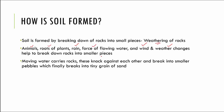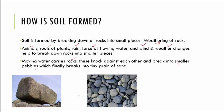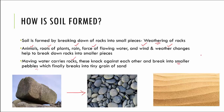Moving water carries rocks, and forceful water can carry anything with it. When it carries these rocks, they knock against each other and break into smaller pebbles. Once they break into smaller pebbles, you finally end up with a tiny grain of sand. So first water carries away rocks, rocks get converted into pebbles, and pebbles in turn get converted into a tiny grain of sand. This is how exactly soil is formed.